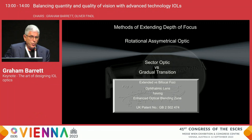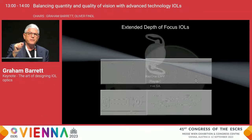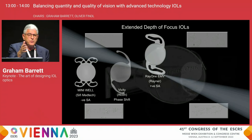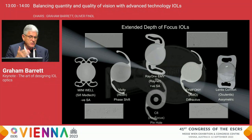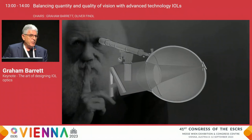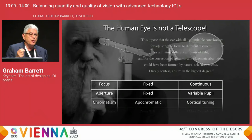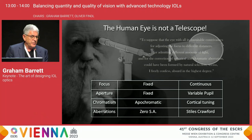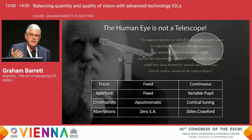It's fascinating to see the number of different so-called extended depth of focus or enhanced monofocal lenses available today, with examples of all the different optical principles described. But when you choose an extended depth of focus lens, it's important to remember that the human eye is not a telescope. The focus isn't fixed — it's continuous. The aperture is variable, unlike the fixed aperture of a telescope.